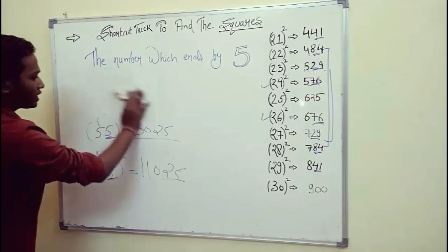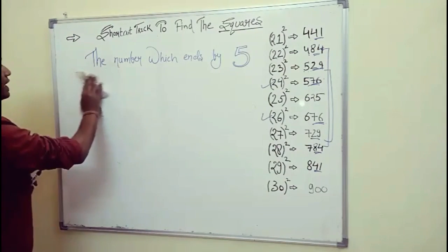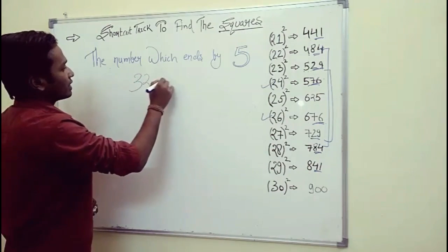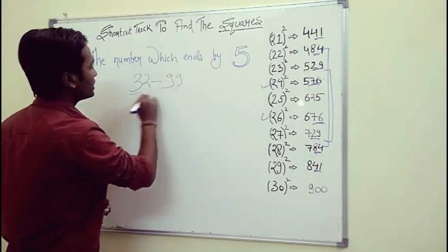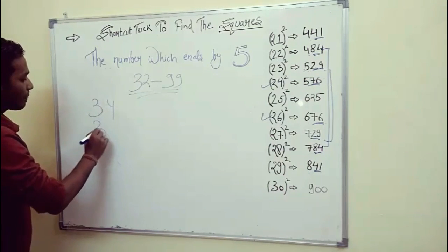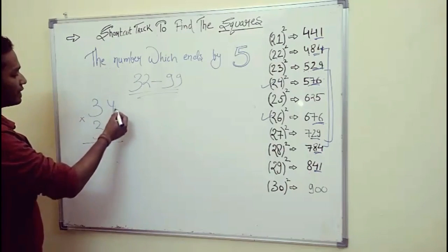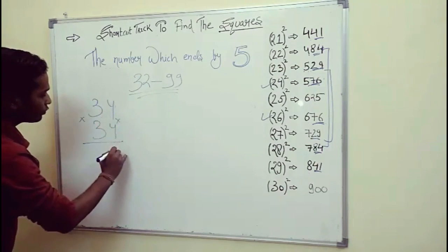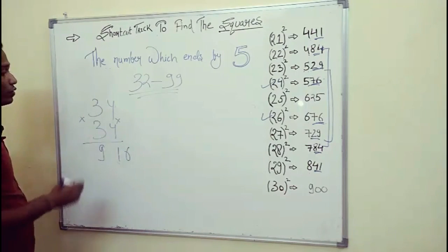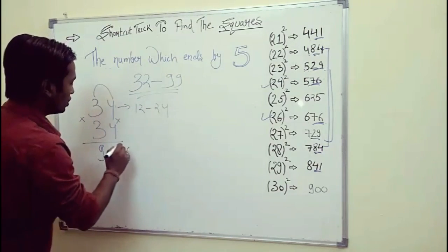Now we talk about numbers from 32 to 99. We have to multiply these two numbers and double it, that is 25.